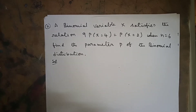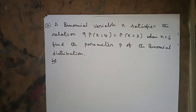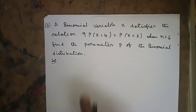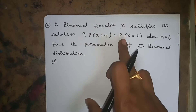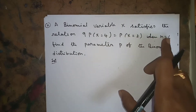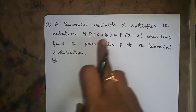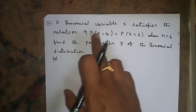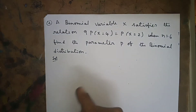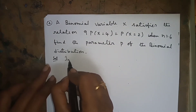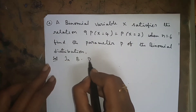Hello everyone, we will do a few more binomial distribution problems. The next problem: a binomial variable x satisfies the relation 9 into P(x=4) = P(x=2), when n is equal to 6. Find the parameter p of the binomial distribution. We have to find the p value. The relation is given, as well as n=6.